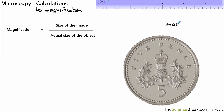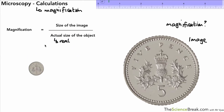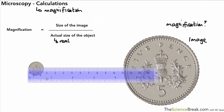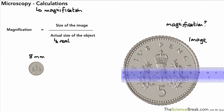We're looking at the magnification of this five pence coin — how much has it been magnified? We need to know firstly the size of the image and then the actual size of the object. Sometimes we have the real size written underneath, and there's our real object. We can measure that using a ruler. The real object has a size of eight millimeters and our image is nine centimeters.